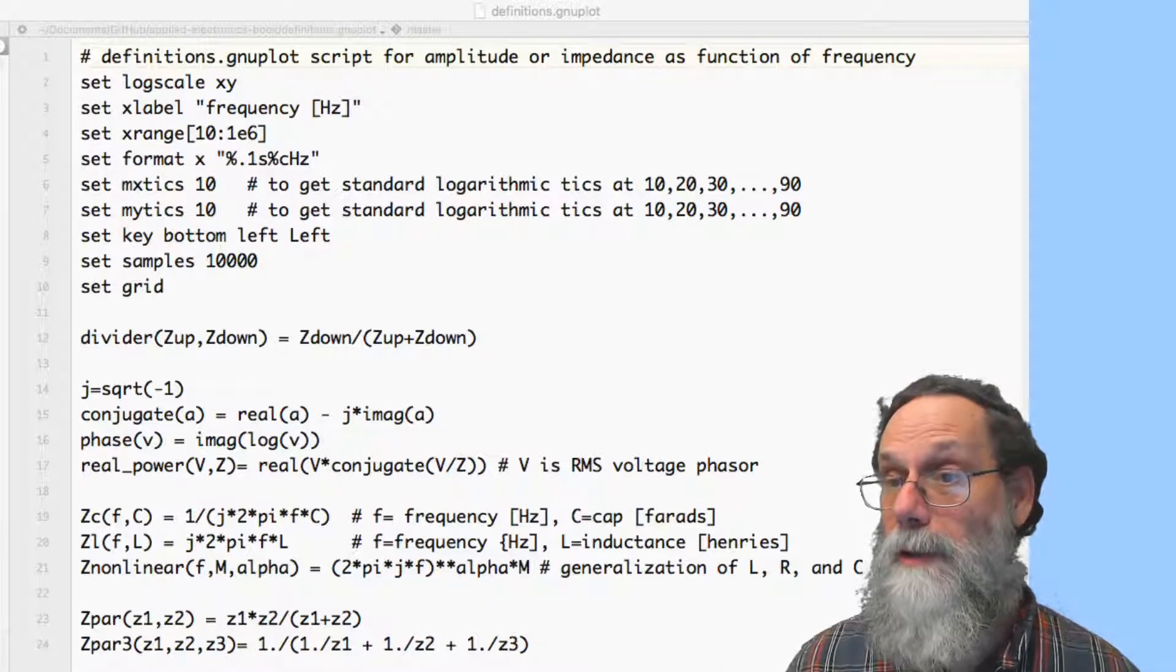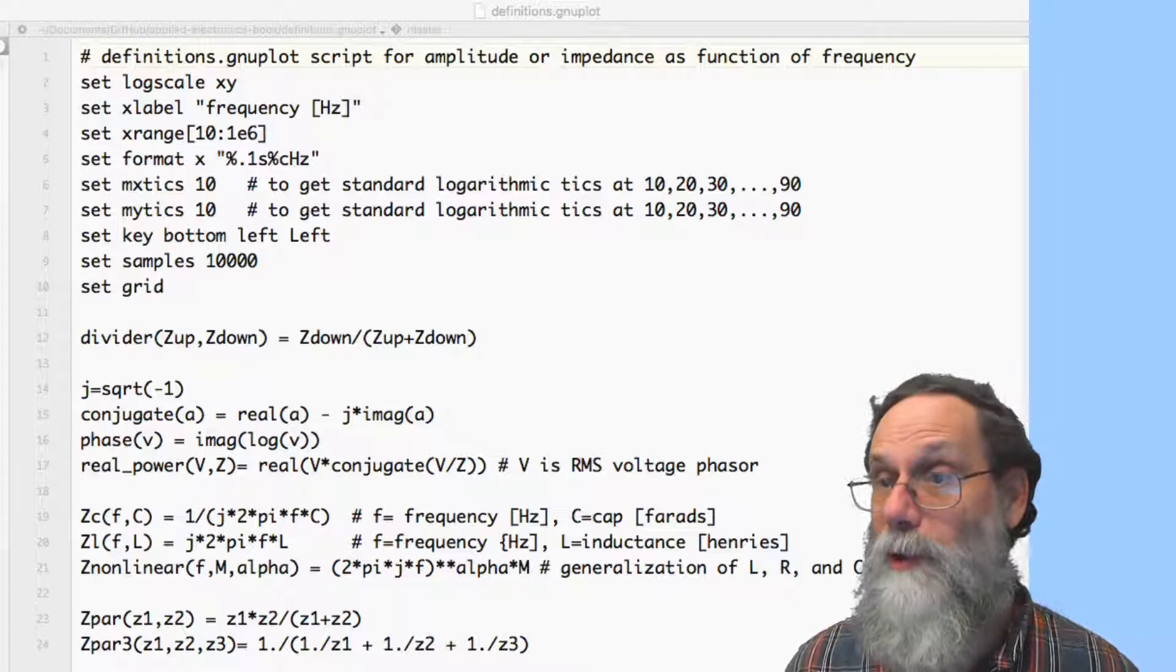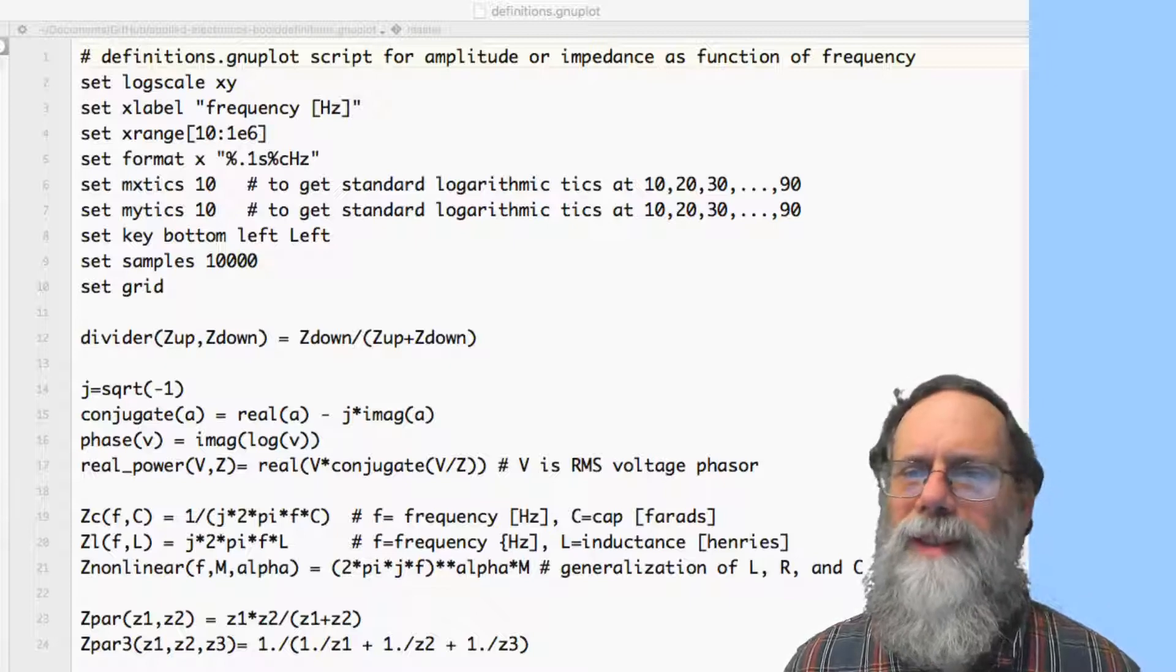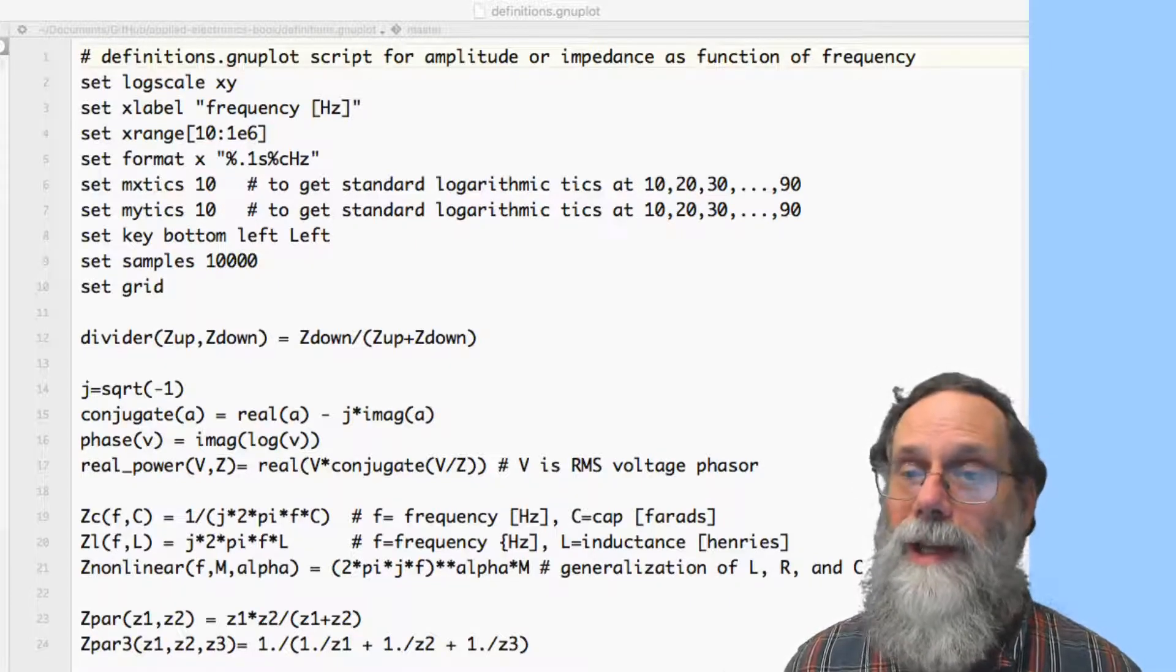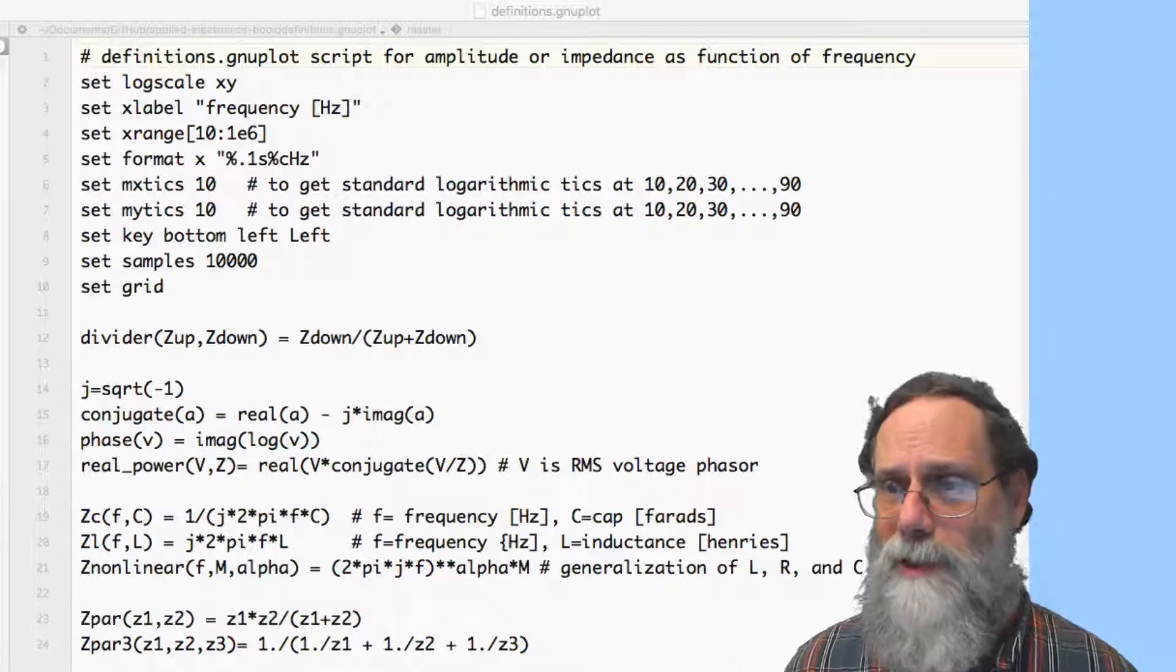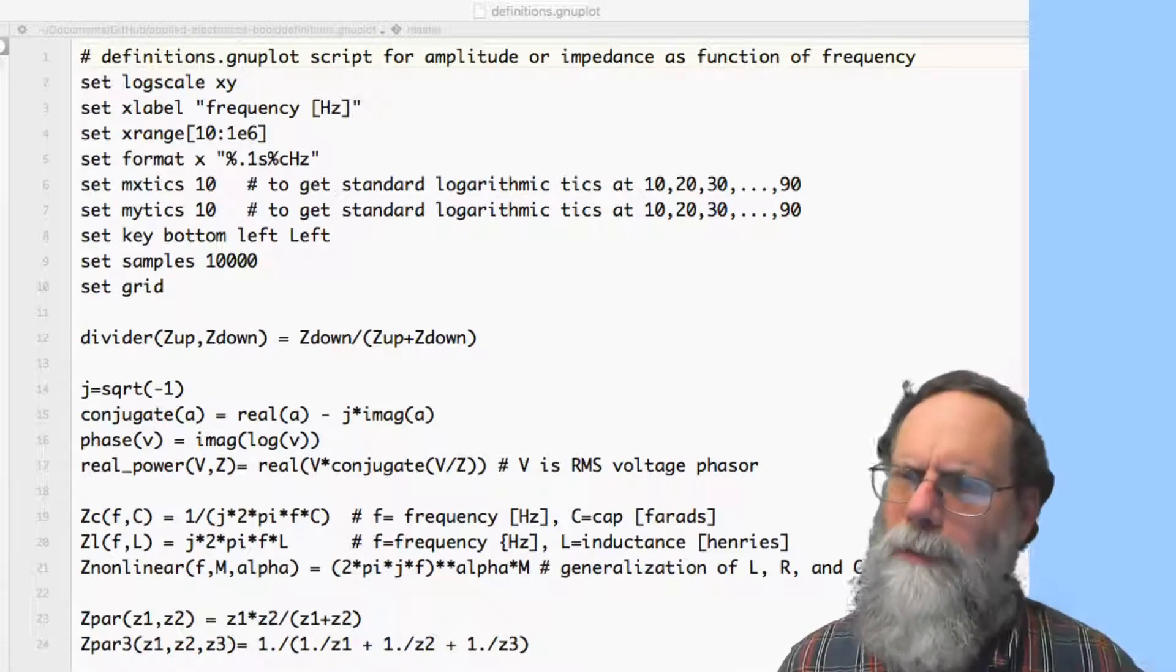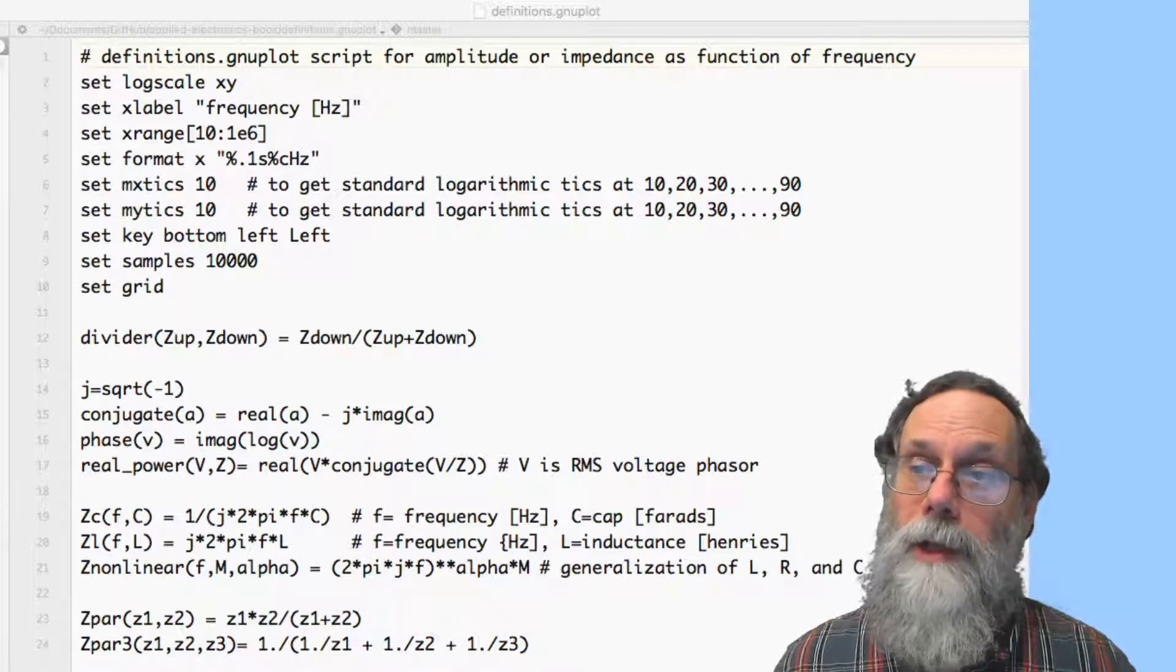Then we have formulas for parallel connection. The general one here, zpar3, says take three things, put them in parallel. 1 divided by 1 divided by z1 plus 1 divided by z2 plus 1 divided by z3. I've also provided a shortcut one, which is just having two things in parallel. It's algebraically equivalent. The slight advantage of doing zpar in this format with a multiplication is that if one of the numbers is zero and the other one isn't, I don't get a divide by zero with this one. Whereas with zpar3, they've all got to be non-zero. These are convenience functions that you can use in your scripts so that you don't have to go, what's the formula for capacitance? What's the formula for parallel? You've just got built-in things that you can use to make your code more readable.